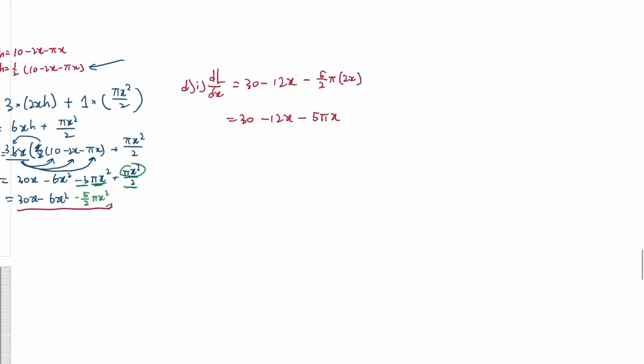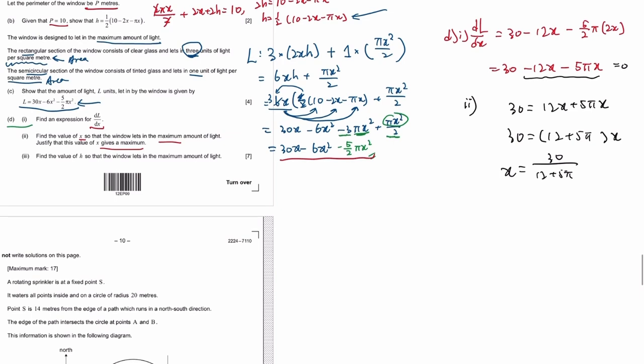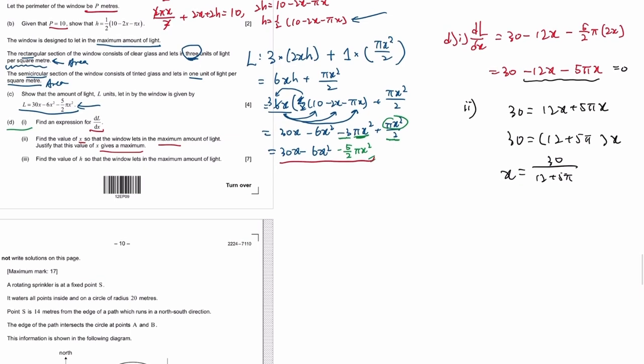So maximum or minimum occurred when the derivative is 0. So you make the derivative 0 and then you solve for x. I'll move this to the right first. Then factor x out. And that's the value of x. They want decimal places, they didn't say that, so it's fine.